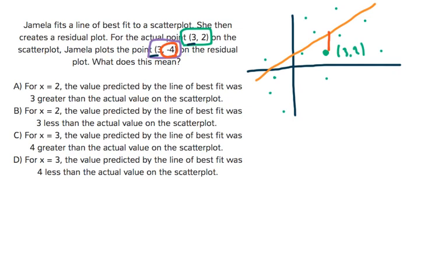So let's go ahead and look at our answer choices. I see for x equals 2, the value predicted by the line of best fit was 3 greater than the actual value on the scatter plot. We're not talking about x equals 2, we're talking about x equals 3 here. So we can go ahead and cross that off. We can cross off B too — for x equals 2, we're not talking about x equals 2, we're talking about x equals 3.